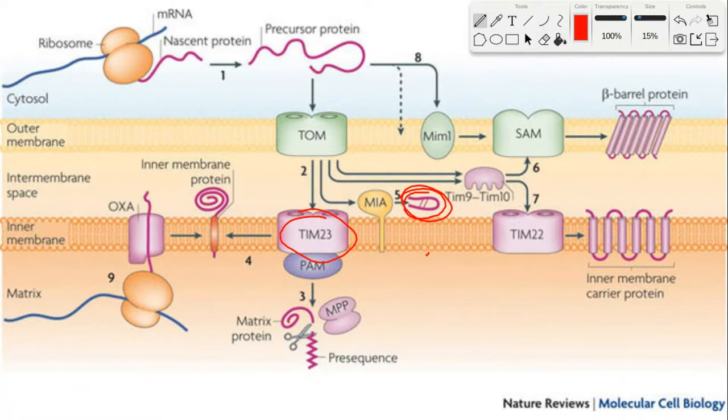Lastly, the protein can be imported into the mitochondrial matrix, and this occurs through the action of TIM-23, or translocation of the inner membrane 23. This is where things get interesting.